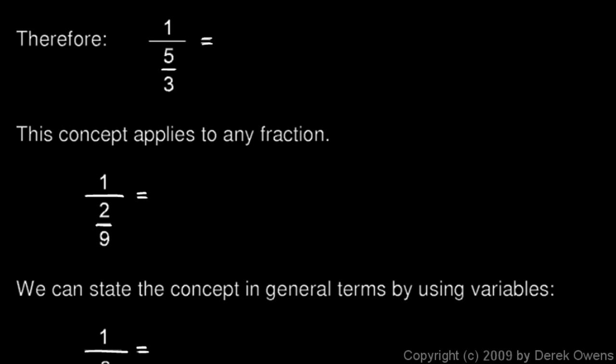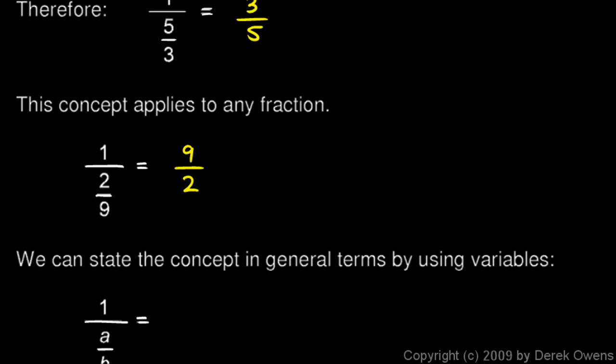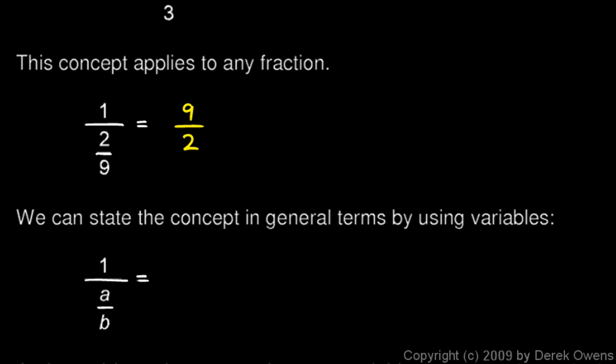On the printed notes you can fill this in: 1 over 5 thirds is 3 over 5. This concept applies to any fraction — 1 over 2 ninths is 9 halves. We can state this in general terms: 1 over a over b will be b over a for any numbers a and b, any variable, or any mathematical expression.